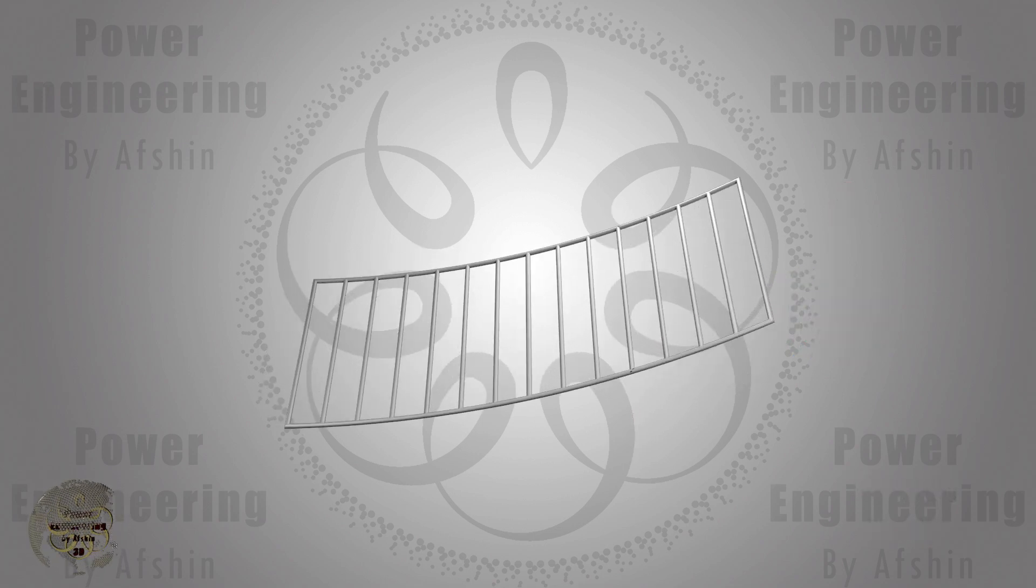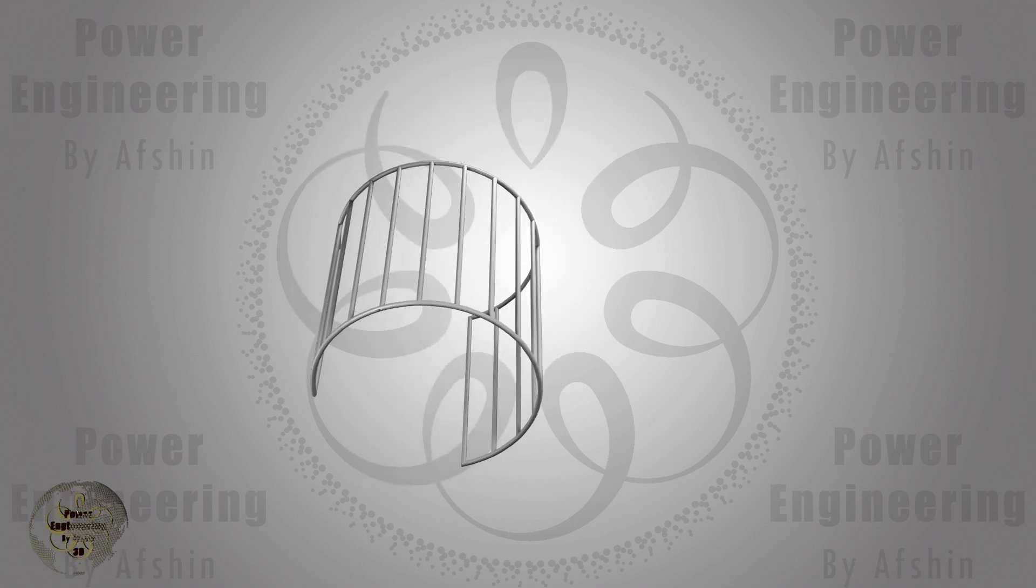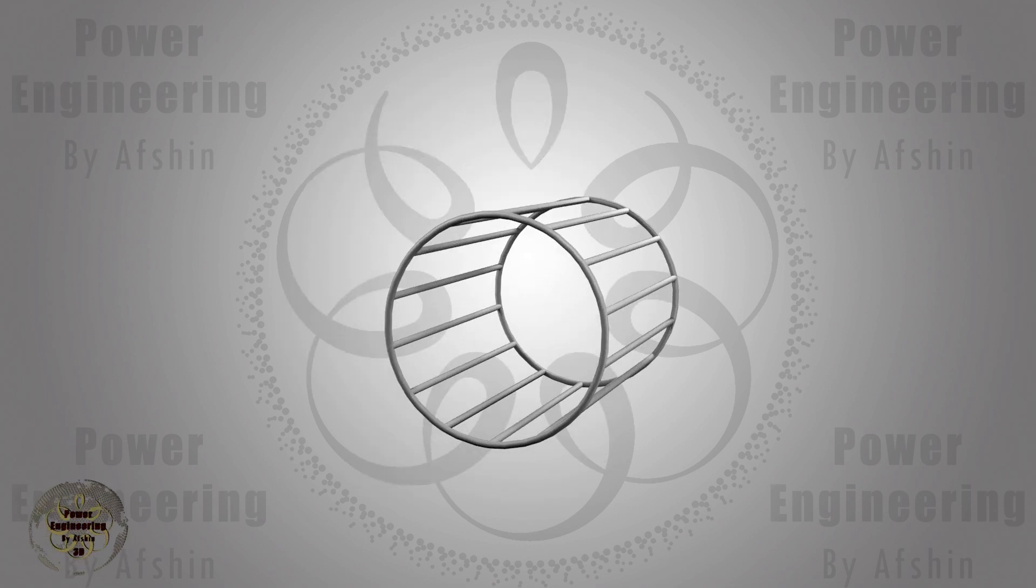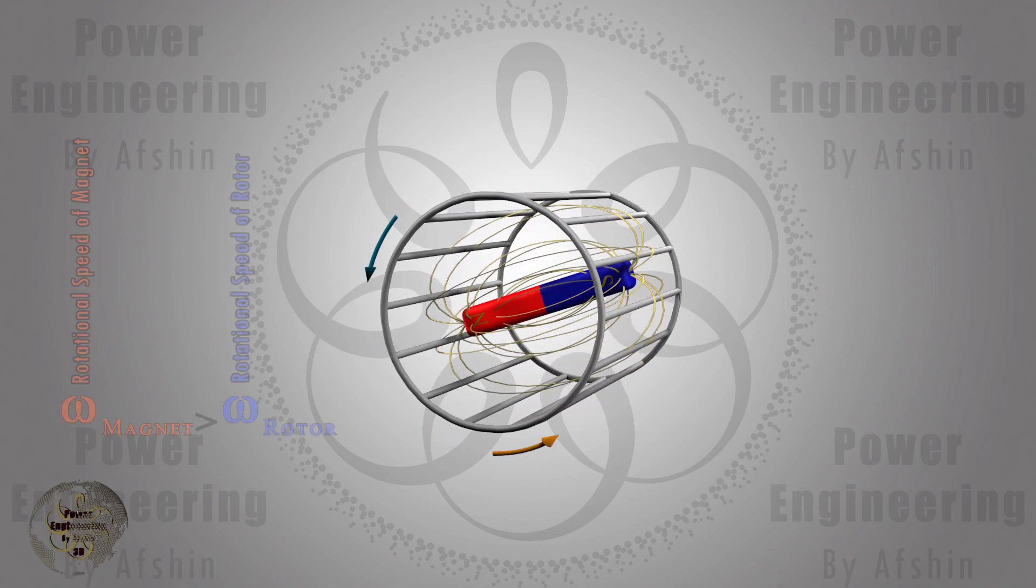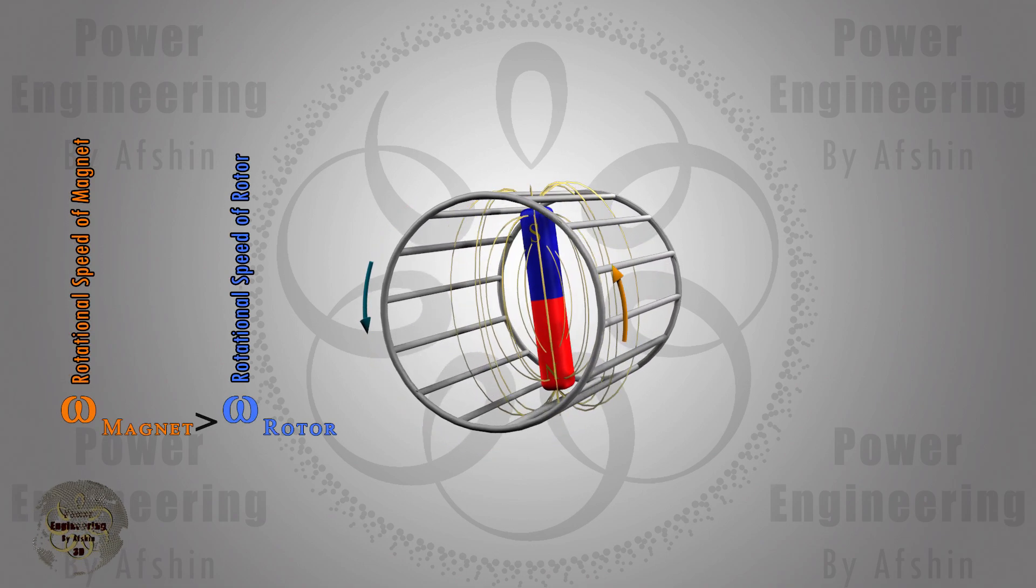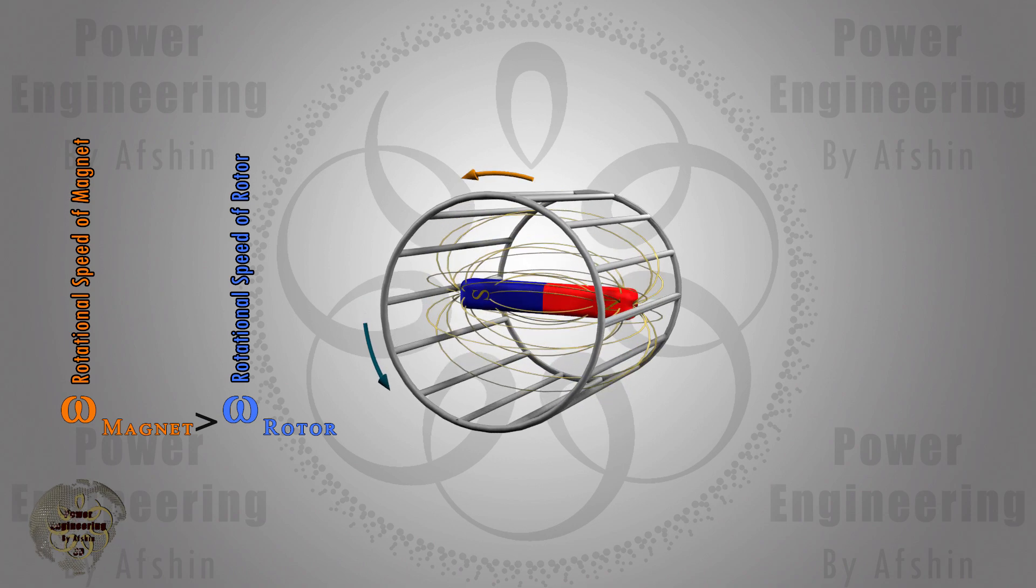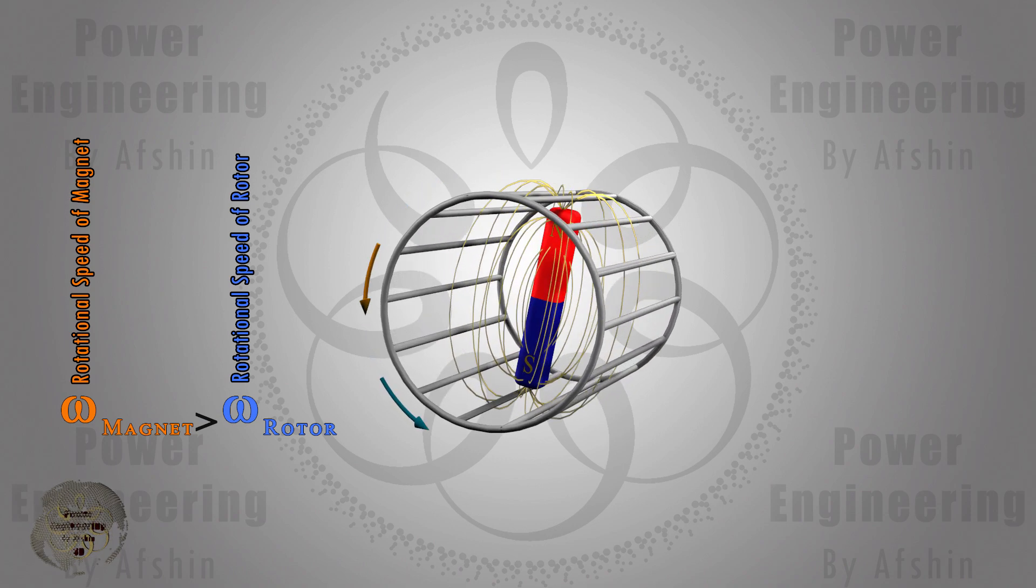If we now consider this ladder to be circular and place a permanent magnet at its centre rotating at a constant speed, just as described for the metallic ladder, the induced electromagnetic force will cause the circular ladder to rotate.